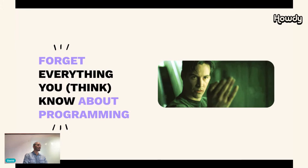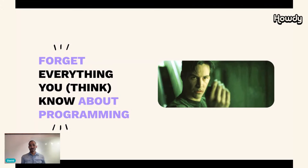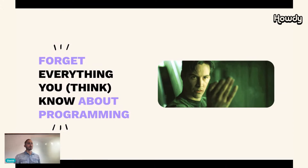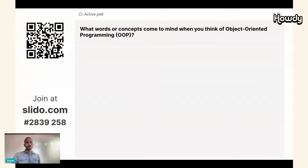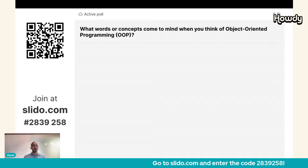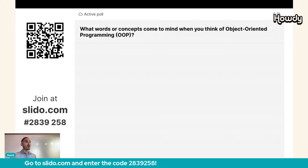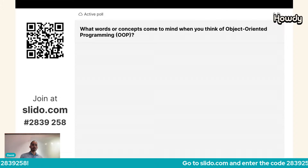When I started researching functional programming, I found in many places this phrase: 'Forget everything you know about programming.' But let's see what we really know about programming. Please help me answer this question: what words or concepts come to mind when you think of object-oriented programming? We need to know what we are going to forget, so please take some time to answer.